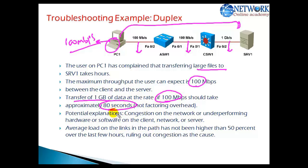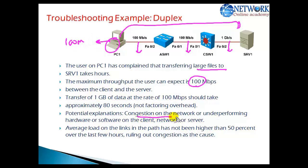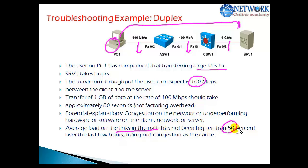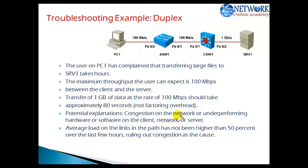The problem here is congestion on the network or underperforming hardware of the client or server. These are some potential explanations. The average load on the links in the path has not been higher than 50% over the last few years, so we can rule out congestion. Transferring 1 GB at 100 Mbps should not take more than 80 seconds, but it is taking a very large amount of time.